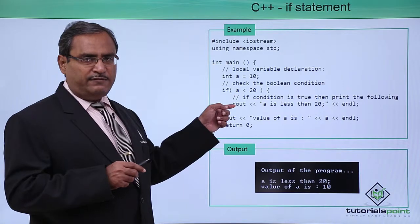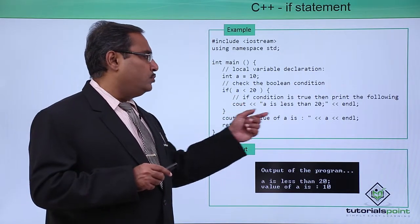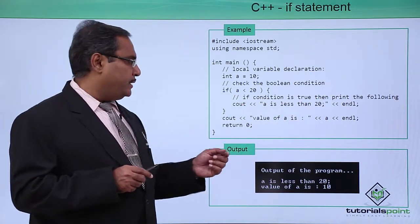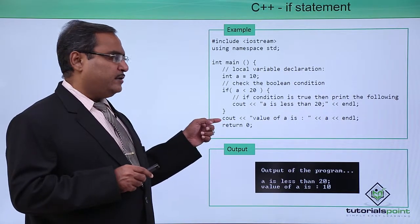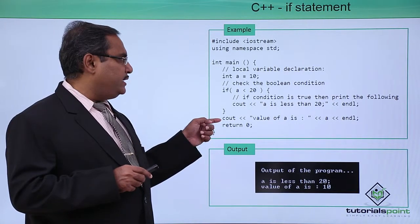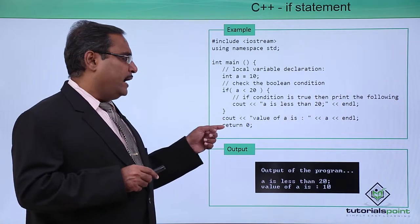The control will come in this if block. C out, the 'a is less than 20' will be printed and then the value of a which will be printed as 20 or 10 back again and return 0.